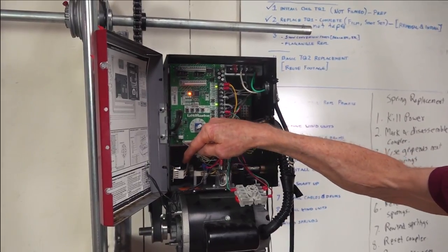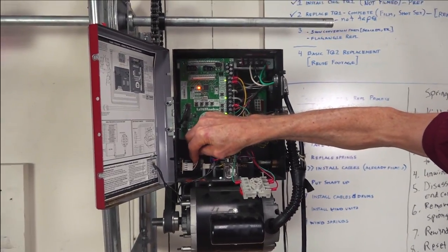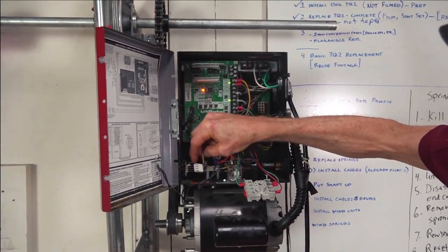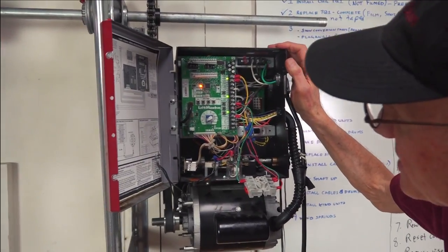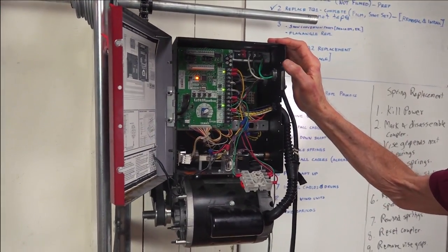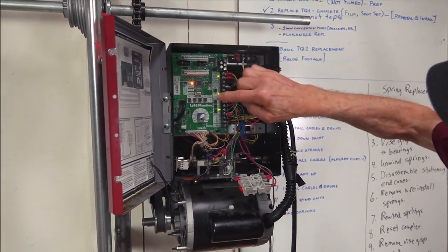This is the RPM sensor down here. If I remove that and then try to run it, close the door.